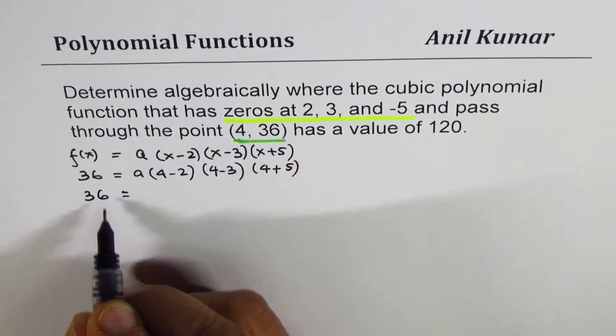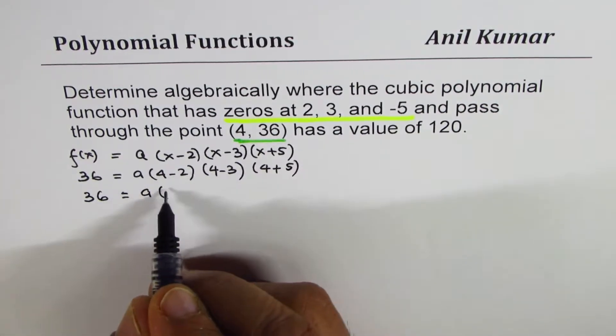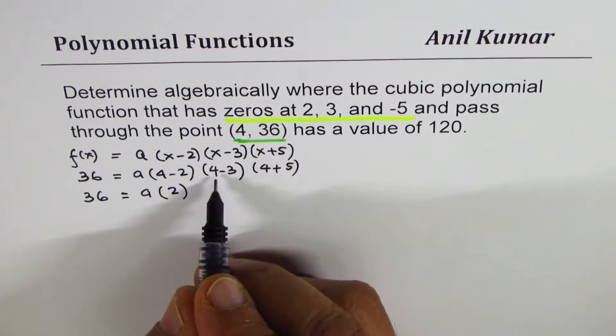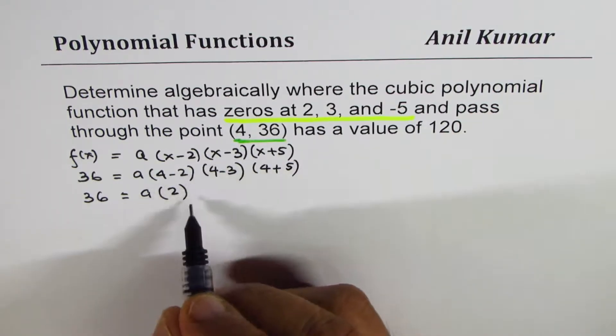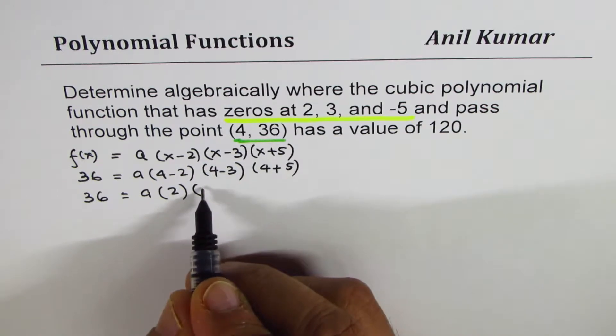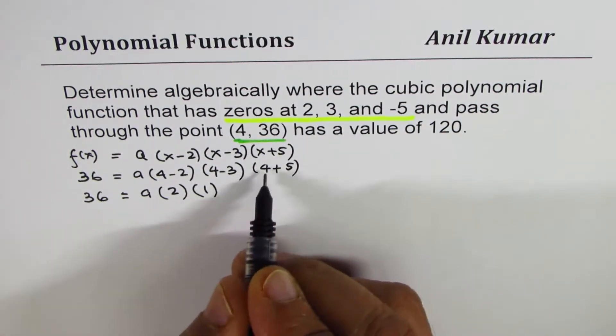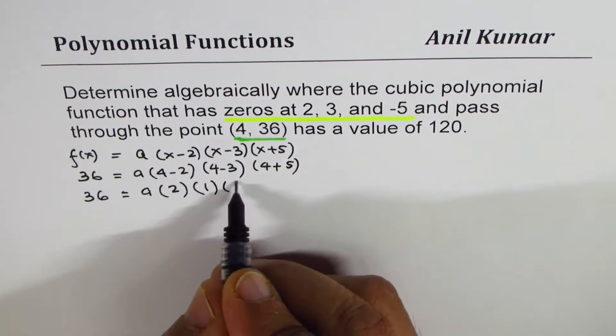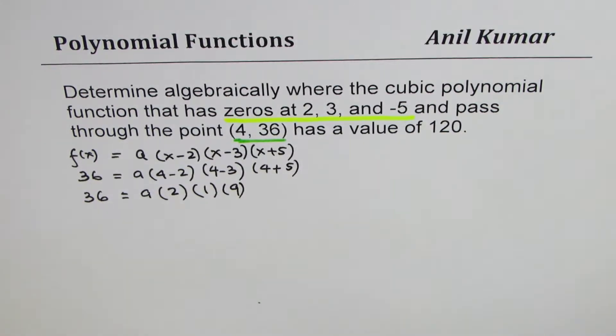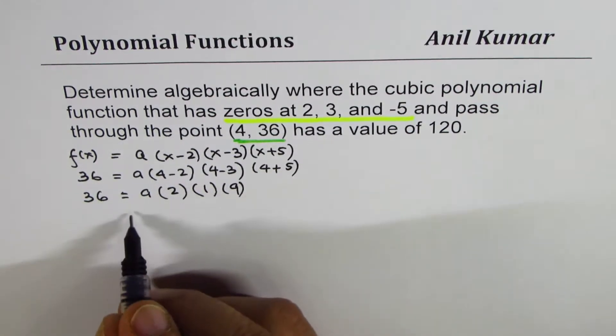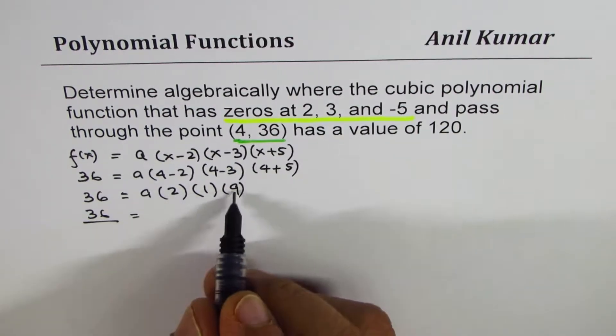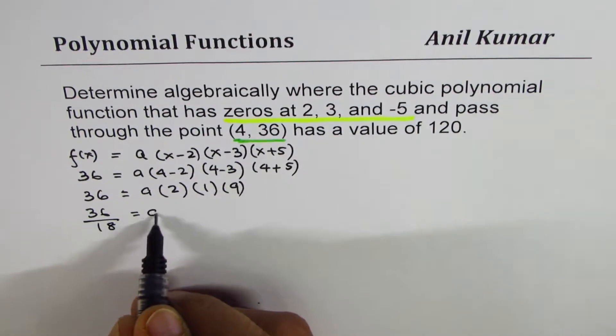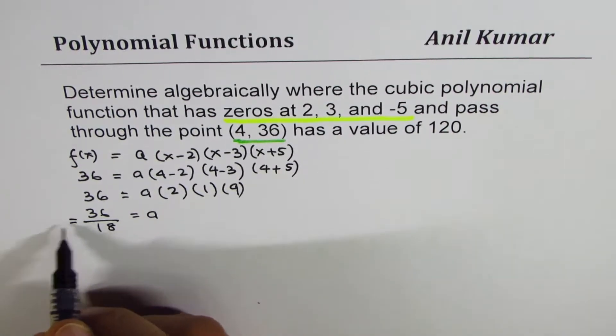So we have 36 equals to A times (4 - 2) is 2, (4 - 3) is 1, and (4 + 5) is 9 for us. So we got the value of A as 36 divided by 9 times 2 is 18, that is A, and clearly that equals 2.